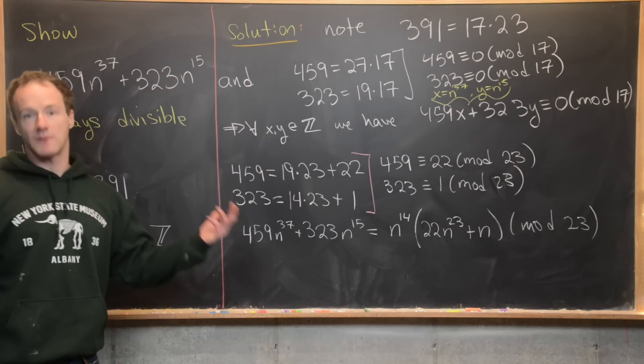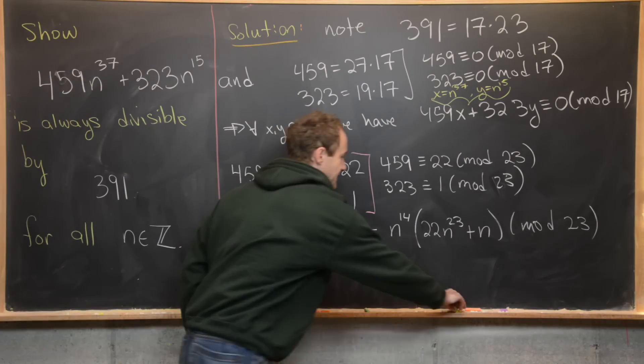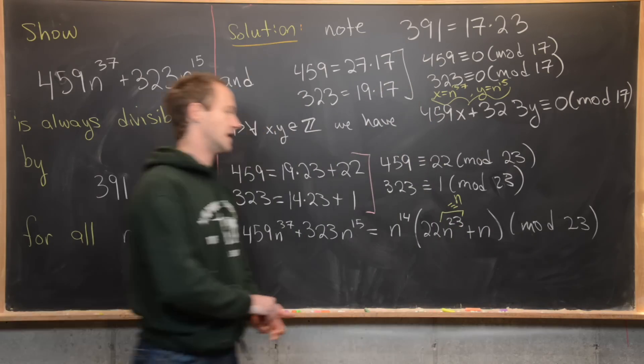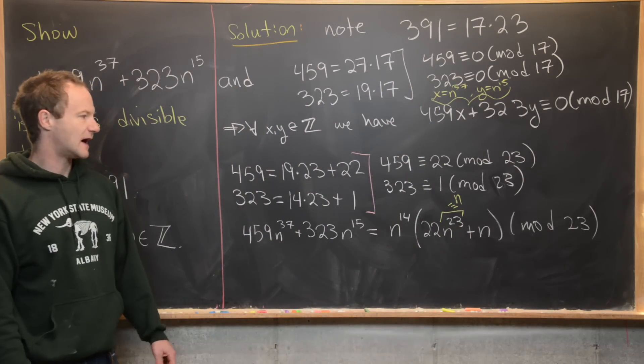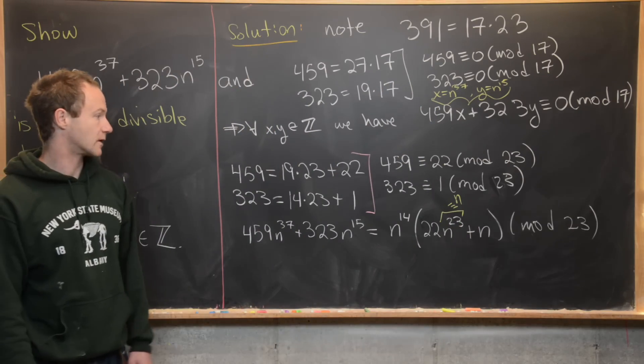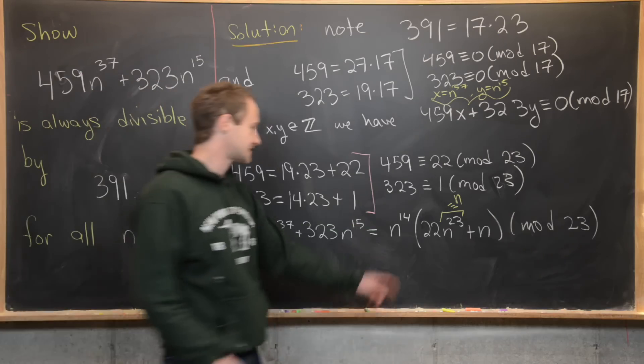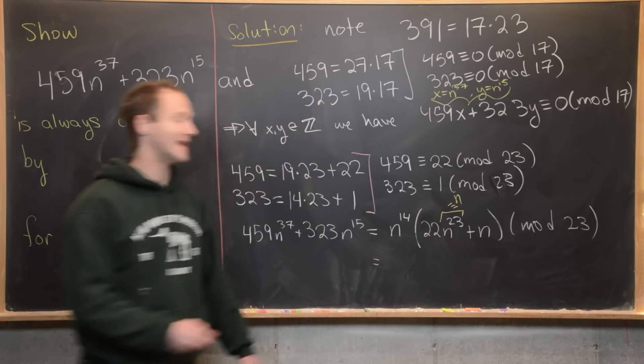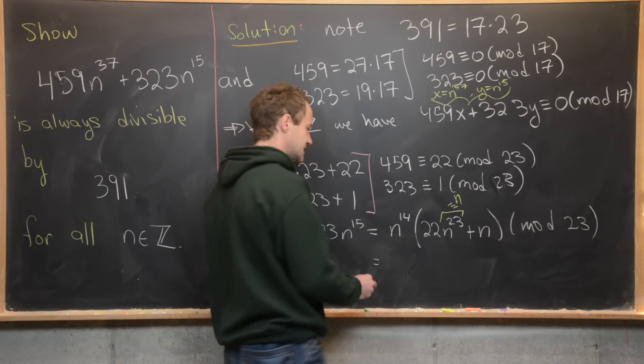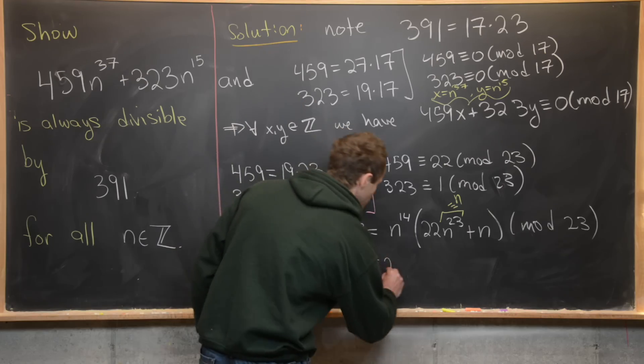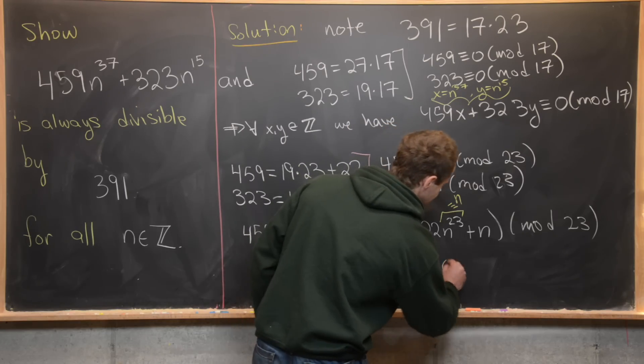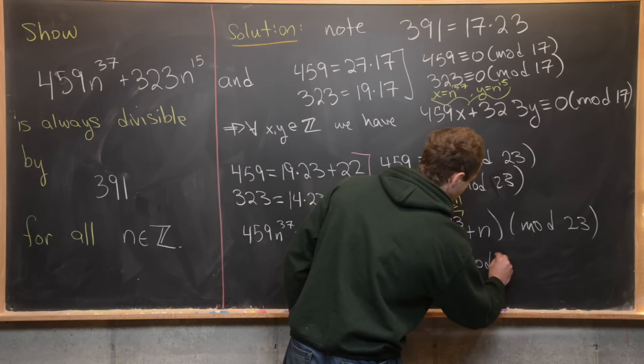But now by Fermat's Little Theorem, we know that this n to the 23 is really just congruent to n mod 23, by the statement that we had before. So what that tells us is that this interior here adds up to 23 n. Putting that back together with this n to the 14, we have 23 n to the 15, but that's congruent to 0 mod 23.